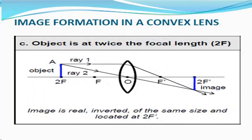When an object is at twice the focal length, the image is real, inverted, of the same size, and located at 2F.